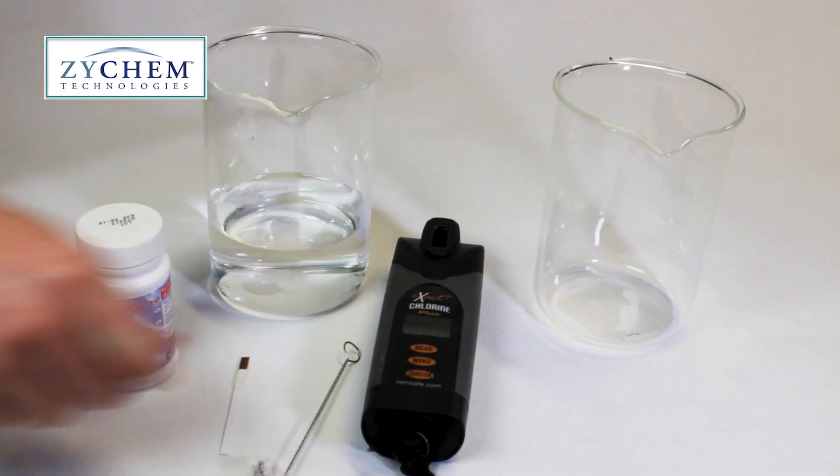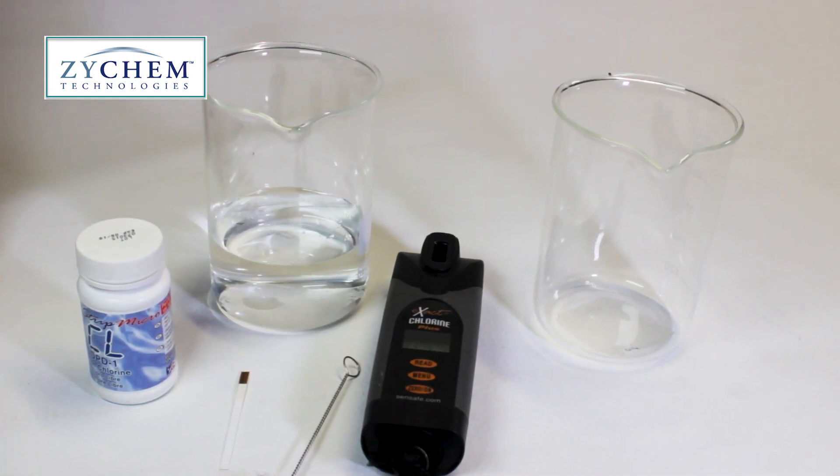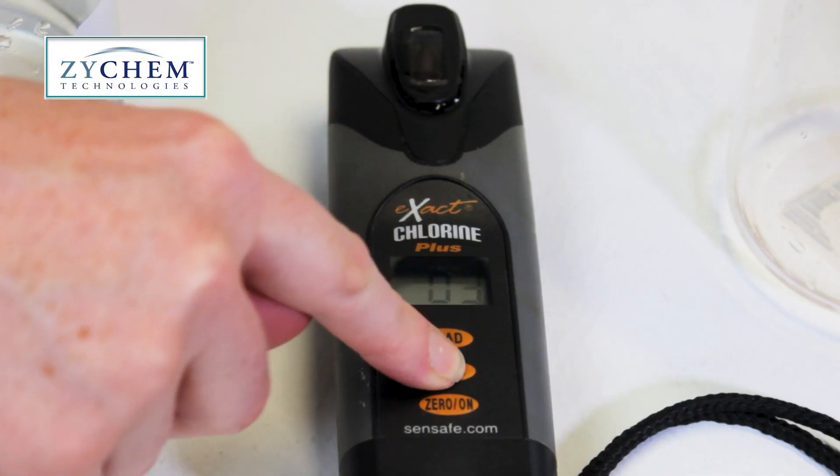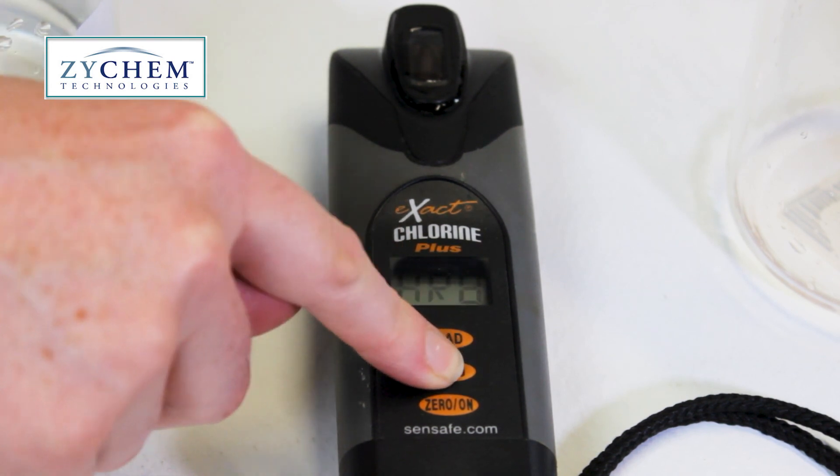Next, turn the photometer on using the zero on button if it's not already on. Use the menu button to toggle through to the menu item CL1, which is our selection for testing free chlorine.